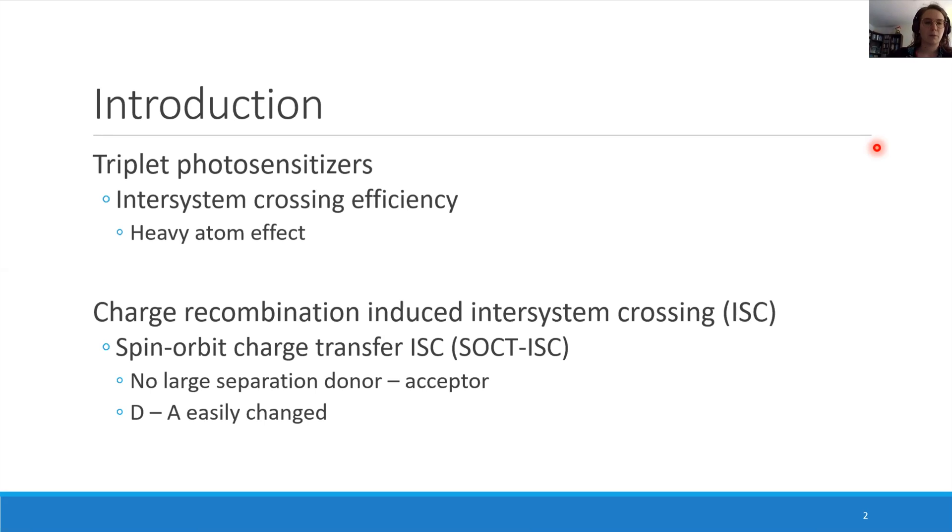The electron transfer is then accompanied by a molecular orbital angular momentum change, which compensates for the spin-orbit angular momentum change. This results in intersystem crossing with fast kinetics on the picosecond timescale. This is called spin-orbit charge transfer intersystem crossing.